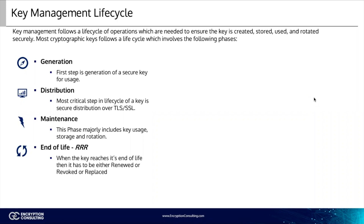The generation of a key is the first step in ensuring that key is secure. If the key in question is generated with a weak encryption algorithm, then any attacker could easily discover the value of the encryption key. The next step of the lifecycle is ensuring the safe distribution of keys. Keys should be distributed to the required user via a secure TLS or SSL connection to maintain the security of the keys being distributed. Post-distribution comes the maintenance stage, where the key is used for cryptographic operations.